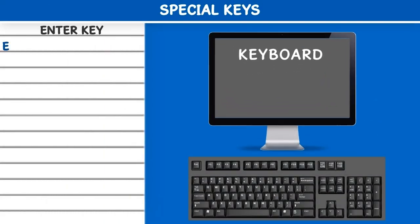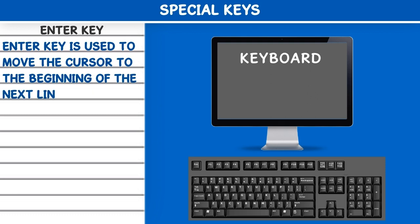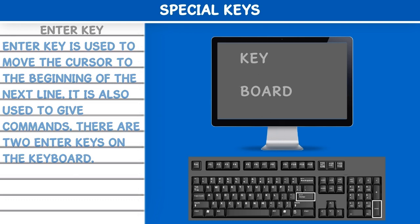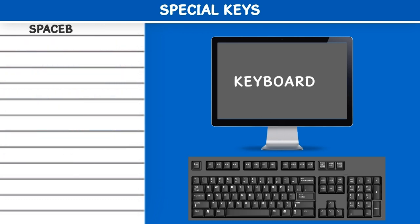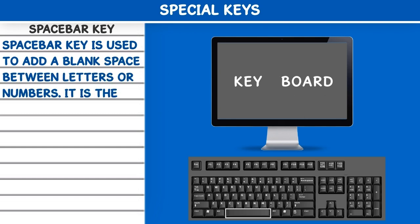Special Keys. Enter key: The Enter key is used to move the cursor to the beginning of the next line. It is also used to give commands. There are two Enter keys on the keyboard. Spacebar key: The Spacebar key is used to add a blank space between letters or numbers. It is the longest key on the keyboard.